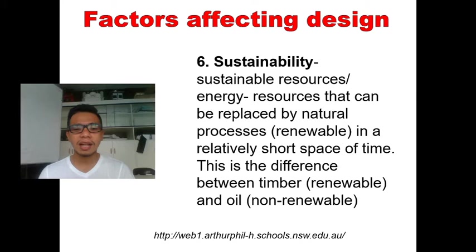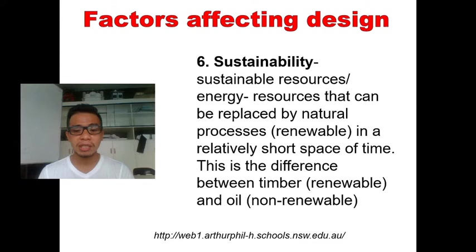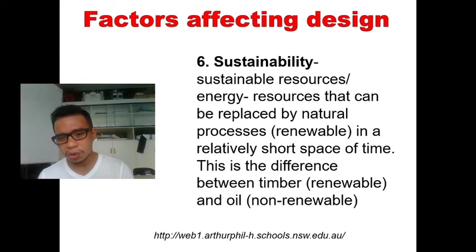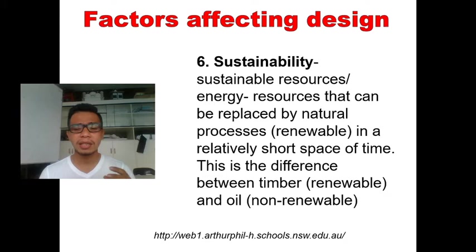Sustainability is also a factor affecting design — choosing materials and energy sources that can be replaced by natural processes, renewable in a relatively short time. For example, timber is renewable while oil is non-renewable. We choose materials that are environmentally friendly. This affects your design: how do you design a chair, a plate, a spoon and fork, or a straw that is sustainable and renewable?